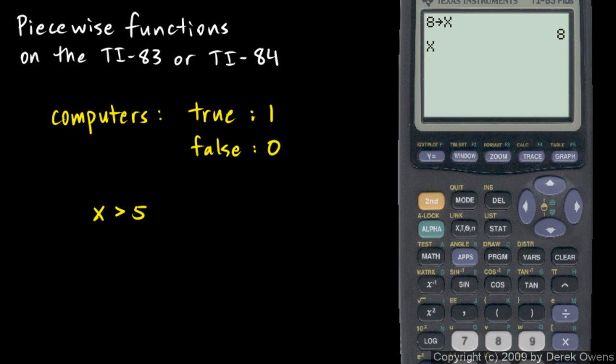X, and then if you look on the math key right here, see the second function on the math key? It says test. Hit second, test. And there option 3 is greater than. So let's say x is greater than, and I'll type in 5. Okay, x is greater than 5.